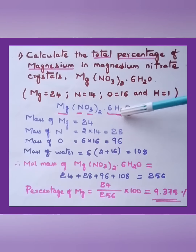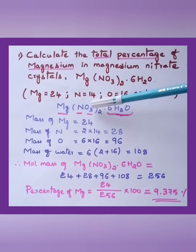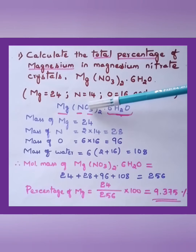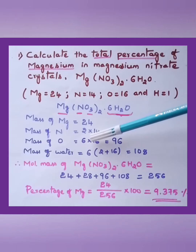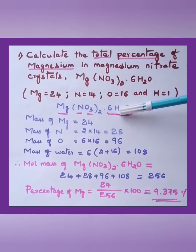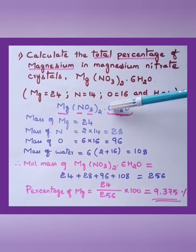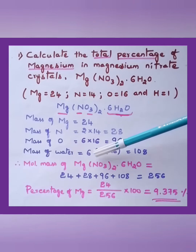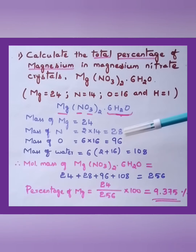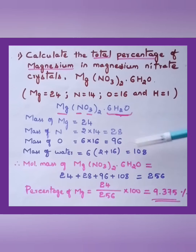For oxygen, there are three oxygens in the nitrate group, so 3 × 2 = 6 total oxygens; 6 × 16 = 96. For the water of crystallization, mass of water: H is twice so 2 × 1 = 2, plus one O = 16; 2 + 16 = 18, and 18 × 6 = 108. Adding all: 24 + 28 + 96 + 108 = 256. This is the molar mass.